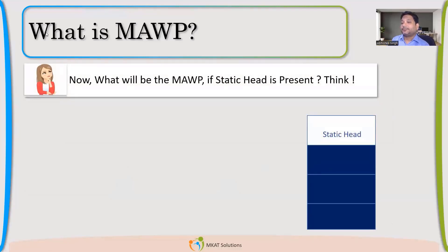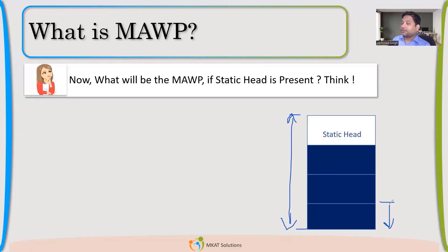Let us consider a pressure vessel. This is a vertical vessel with no head — it's complete. There can be four segments of shells, each of 1 meter, so total height is 4 meters. If we use water as a liquid, it will generate a static head of around 0.01 MPa per segment. You can calculate static head with Rho × G × H.